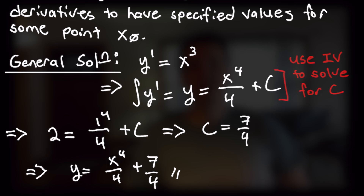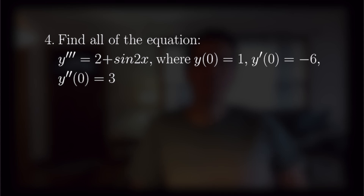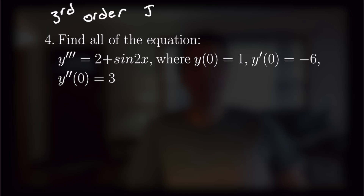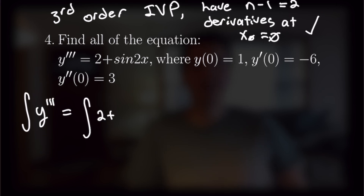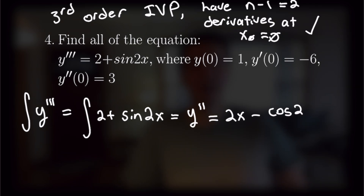Now that we have the basic concept of an initial value problem down, let's move into a higher order, more difficult example. Number 4: find all solutions of y triple prime equals 2 plus sine of 2x, with three initial values. This is a third order initial value problem, and we do have n minus 1, or 2, derivatives specified at x naught equals 0. Taking the first antiderivative, y double prime equals 2x minus cosine of 2x over 2 plus constant c1, since this is a third order equation we'll have multiple constants.